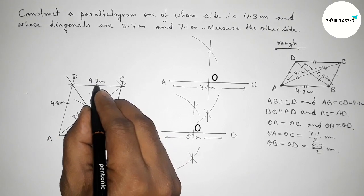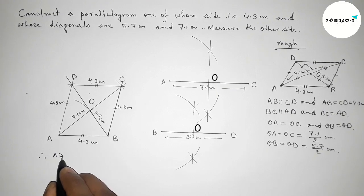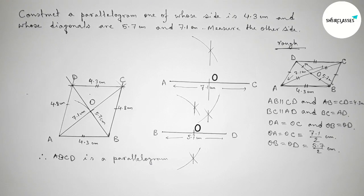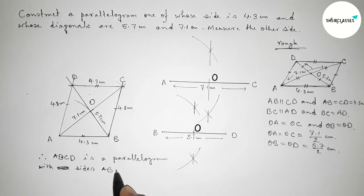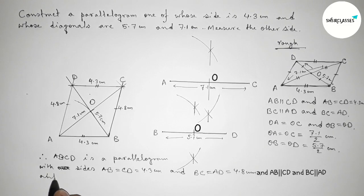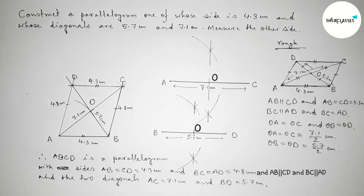This side and this side are equal and parallel, and this side and this side are equal and parallel. Therefore, ABCD is a parallelogram with AB equals CD equals 4.3 cm, BC equals AD equals approximately 4.8 cm, diagonal AC equals 7.1 cm, and diagonal BD equals 5.7 cm. That's all — thanks for watching. If this video is helpful, please share it with your friends.